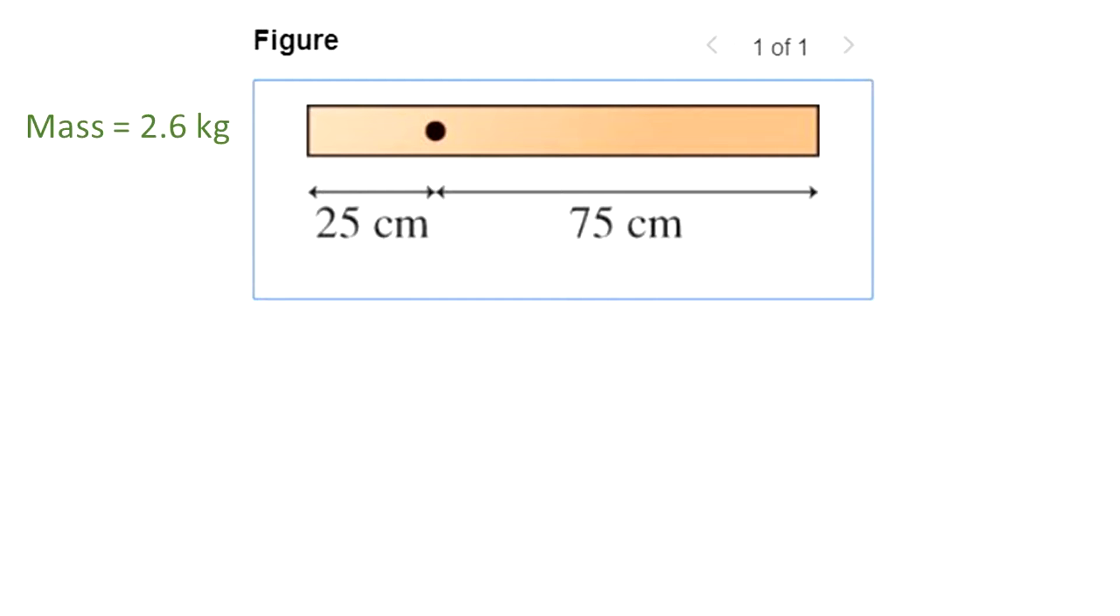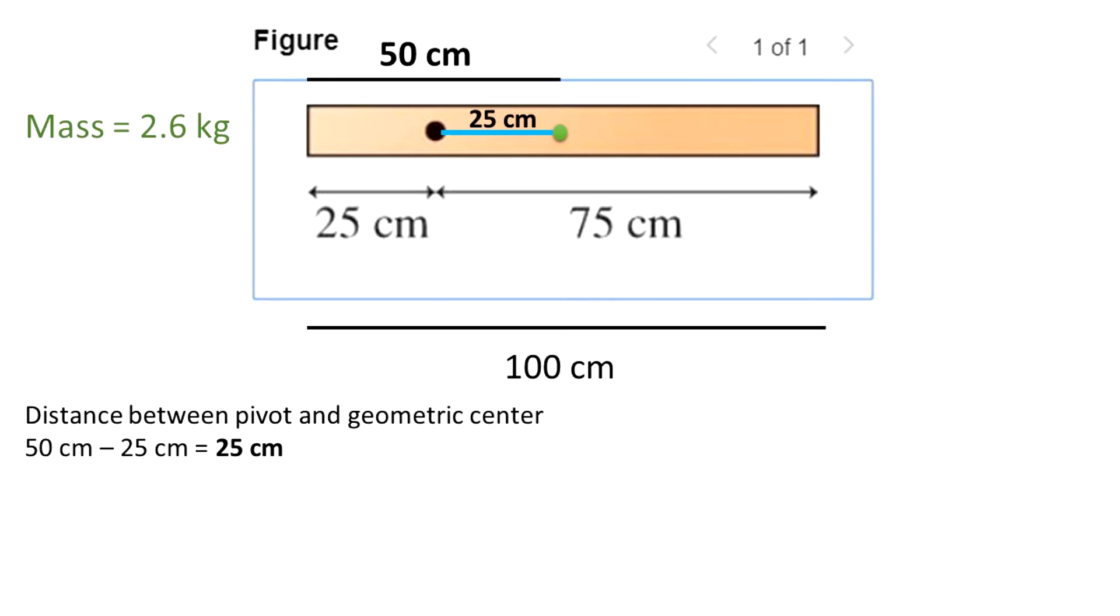The total length of the rod is 100 cm. And we can calculate that the center of the rod is 50 cm. We have 50 cm, that's the center of the rod, minus 25 cm, is equal to 25 cm.